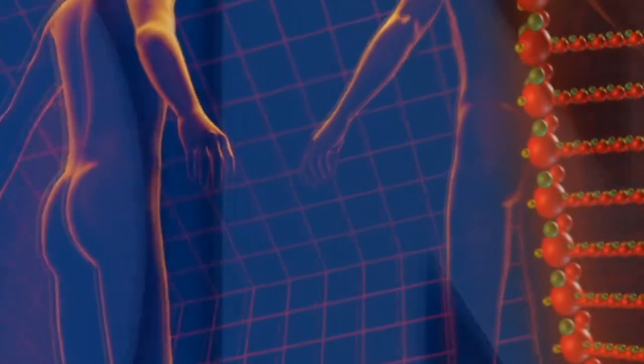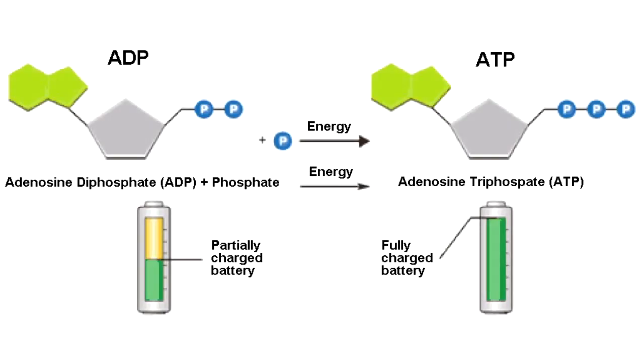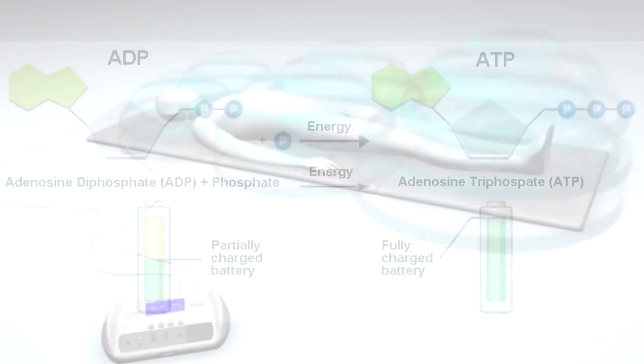Now the cell membrane of each of your 37 trillion cells does act as a capacitor that can keep charges separated until the energy is needed. This is how cellular voltage is stored. And typically the cell uses ATP through the sodium potassium pump to charge up that cellular voltage.